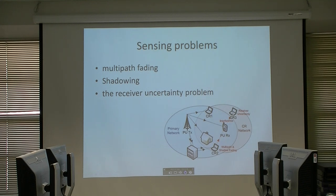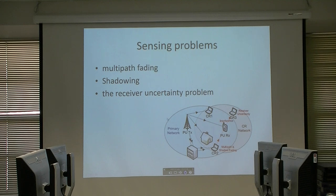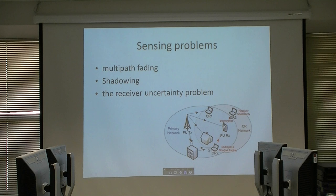Multi-path fading is something that happens between cognitive radio 2 and cognitive radio 3 — there may be something that affects communication between these two. Shadowing is something like a building where the CR is in its shadow. We also have the problem of reflected signals, where CRs receive a reflection from the transmitter that may indicate a different frequency than what is actually available.